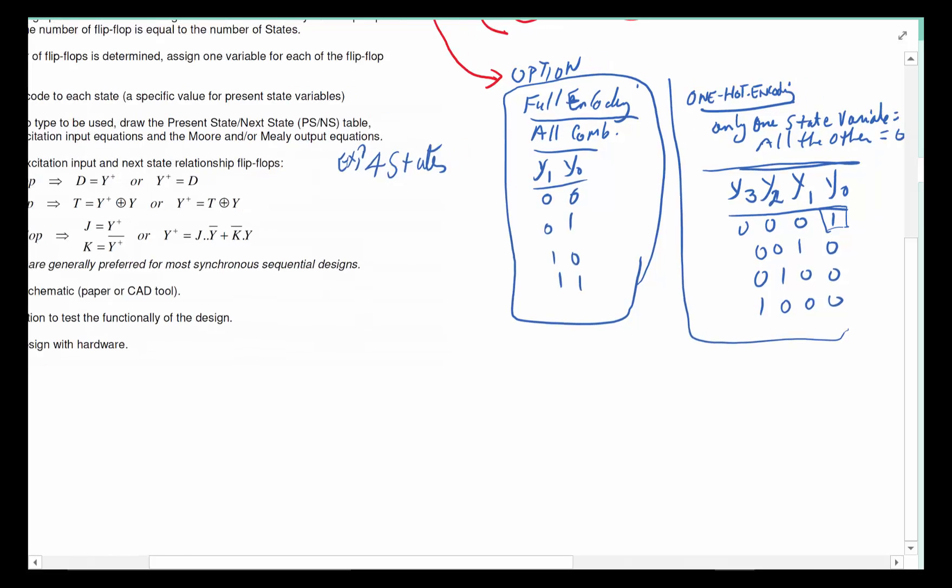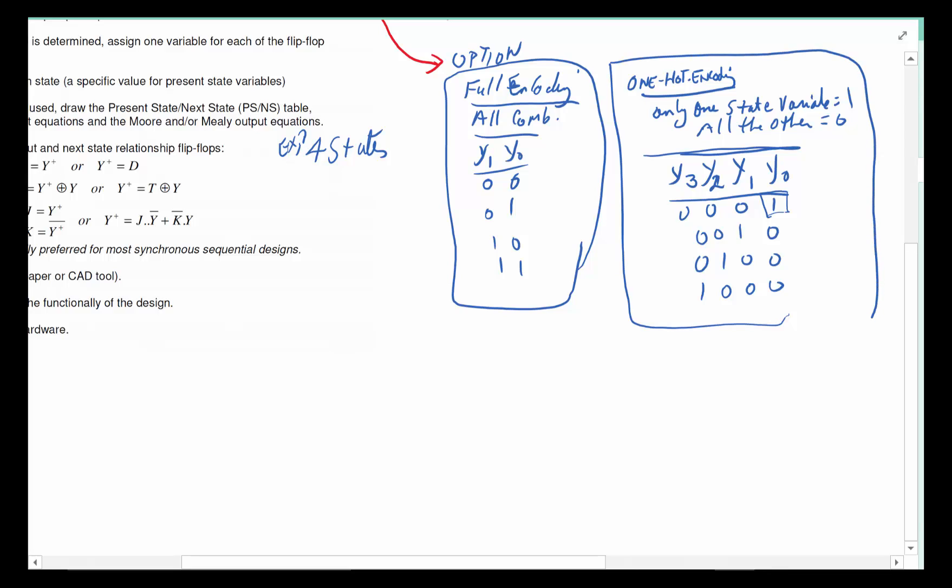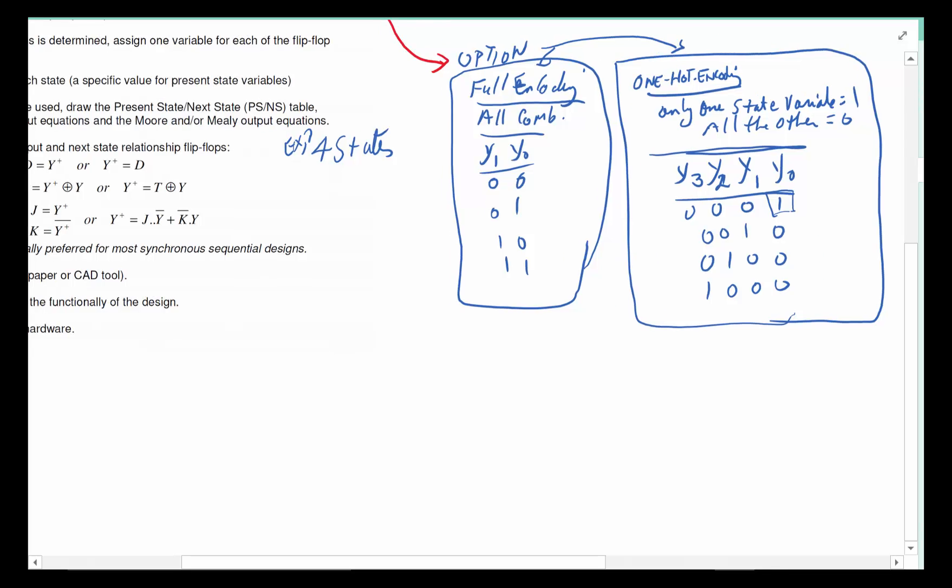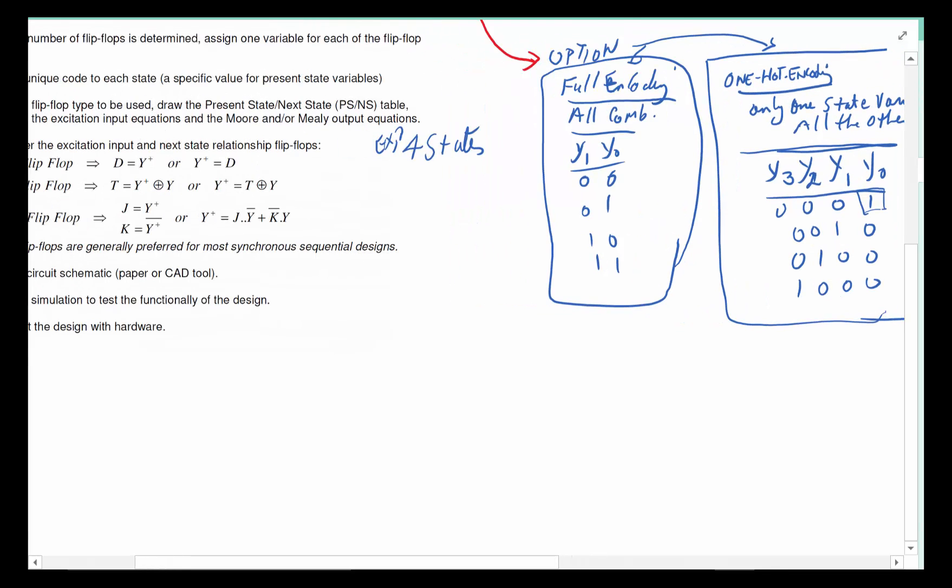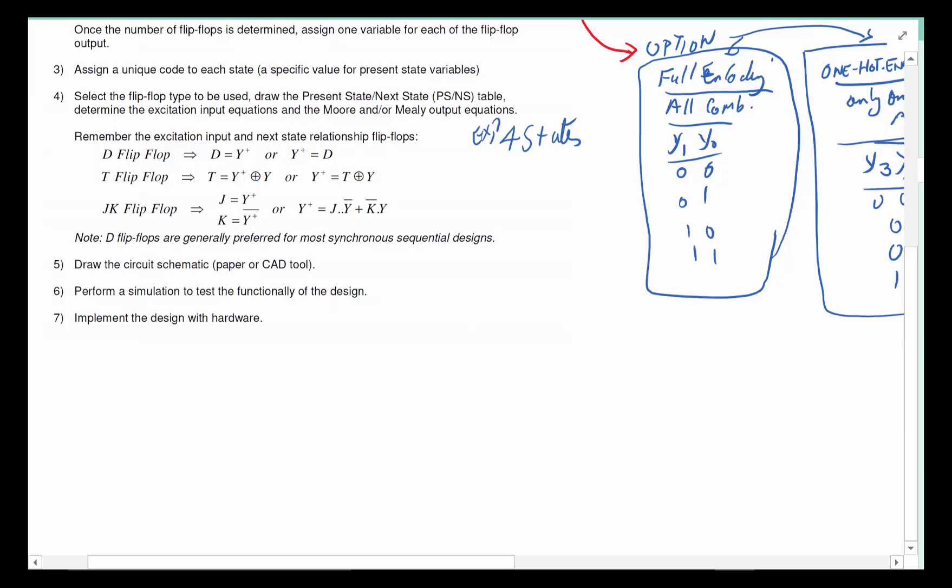This is the first option you have. You have an option of choosing to implement it as full encoding or one-hot encoding. That's the first place you have to decide. Once you've decided how many you need, then you've got to figure out what kind of flip-flop do I want to use.